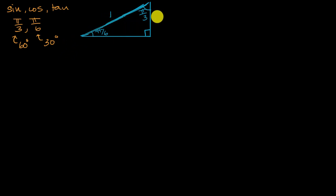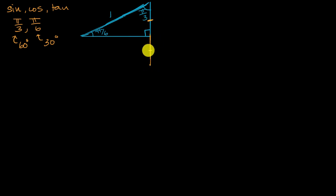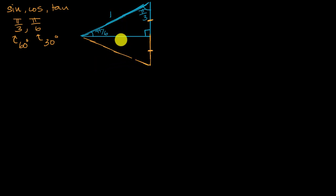To figure out the other two sides, I'm going to flip this triangle over this side and construct a mirror image. Because this is a mirror image, we know this length is going to be congruent to the corresponding length. This side also has length one, this angle is pi over six radians, and this angle is pi over three radians.